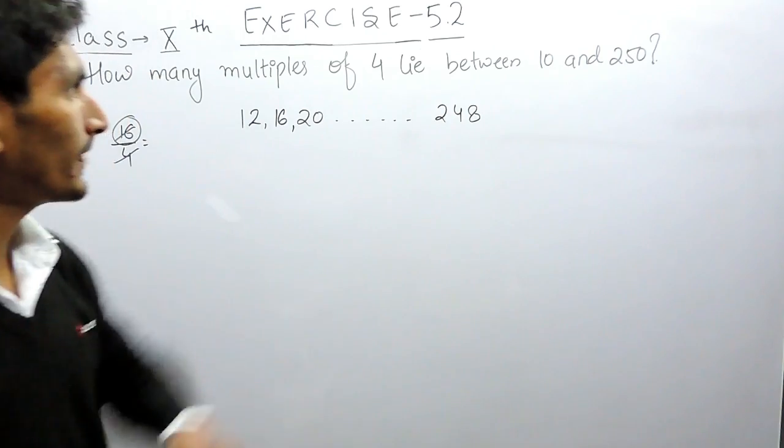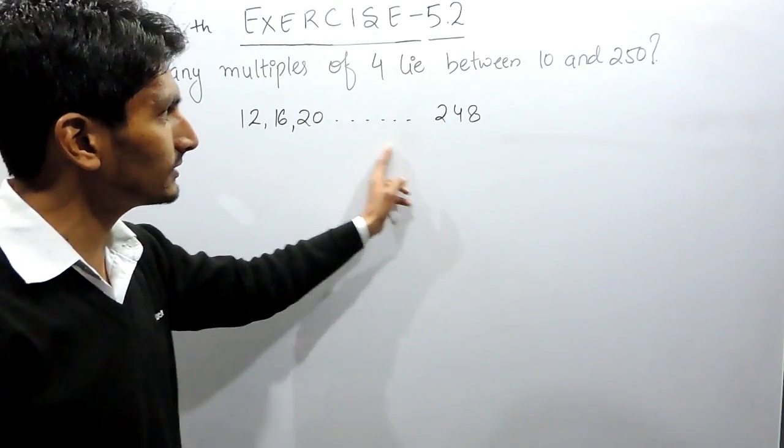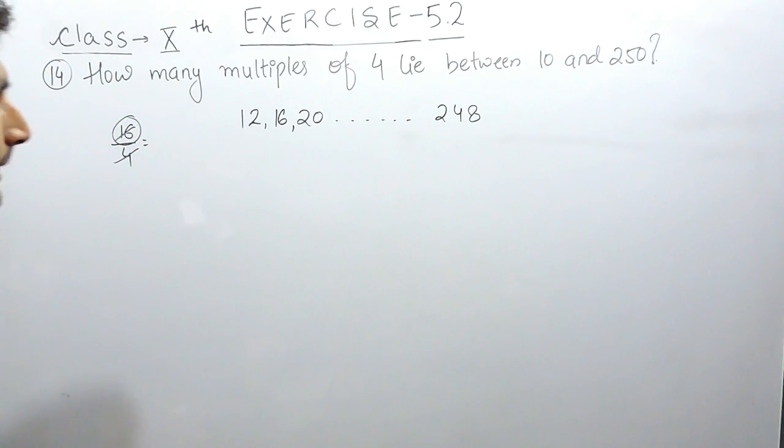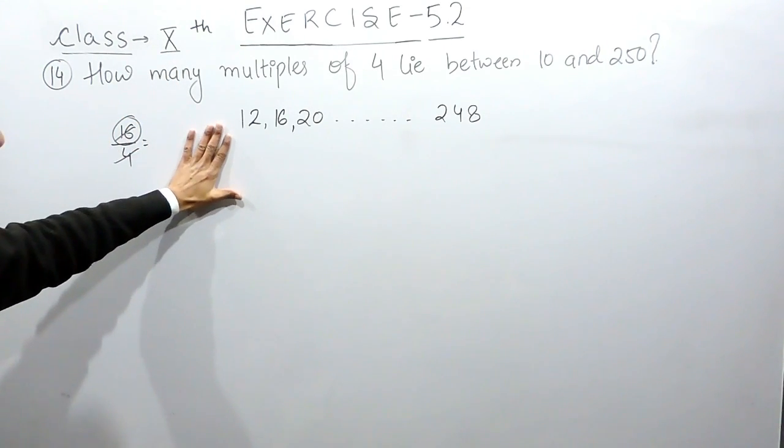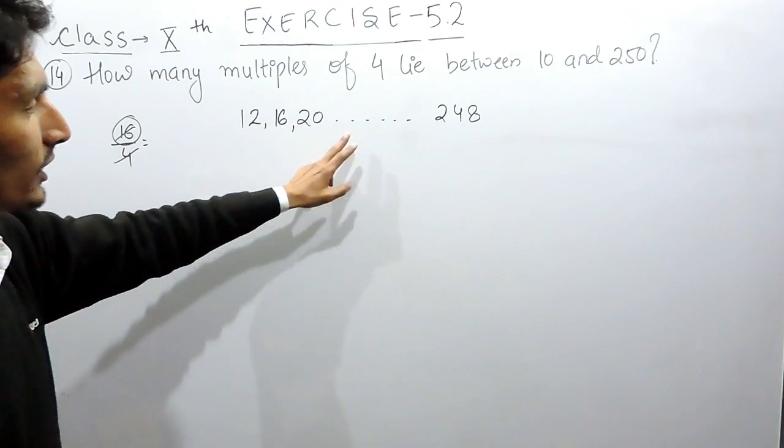So this should be the last number here. The first method is you can count the numbers. Or in another method, you can use the formula for arithmetic progression. Because if you see this series closely, this is an arithmetic progression.